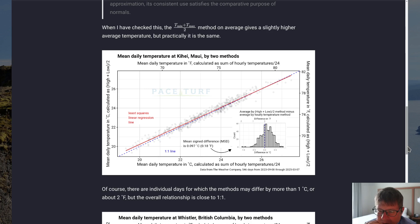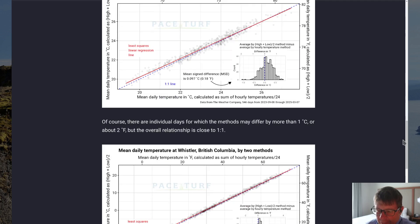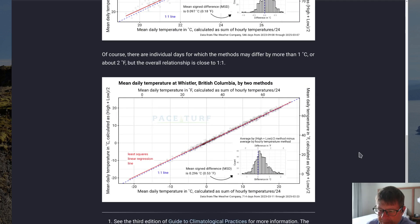When I checked this for Maui in the Hawaiian Islands, the average difference was less than 0.1 degrees Celsius overestimation compared to the 24-hourly temperature method, and that's less than 0.2 degrees Fahrenheit. When I checked this for Whistler, British Columbia, it was about 0.3 degrees Celsius or half a degree Fahrenheit. So, you will tend to get a slightly higher average temperature for the day when you use the maximum and minimum temperatures added together divided by two, compared with an integrated average of 24 hourly temperatures.